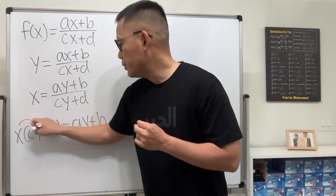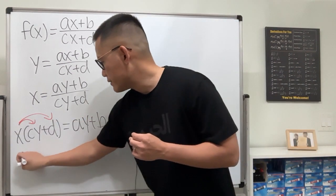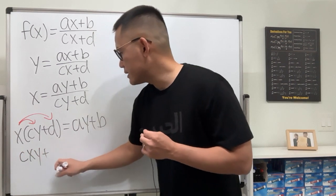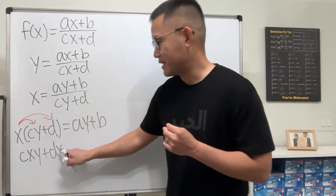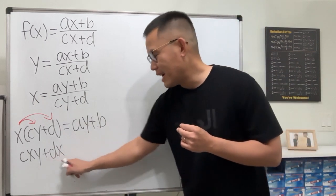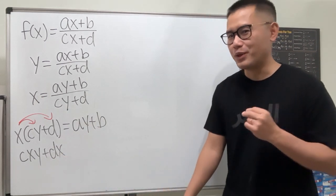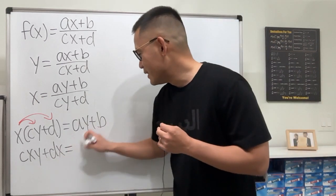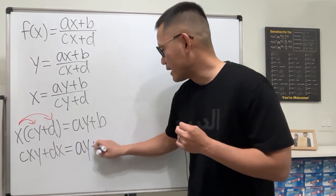And then we can distribute the x from here to here. So we have cxy plus d times x. Now this means d times x. We're not talking about calculus derivative, okay? And then this is equal to ay plus b.